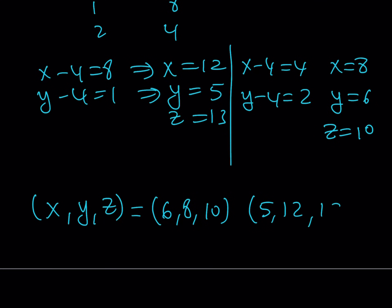And of course, since x and y are interchangeable, 8, 6, 10 would work for x, y, z values. And 12, 5, and 13 would also work. But in essence, we only have two triangles that are different. And those are 6, 8, 10, and 5, 12, 13 triangle.